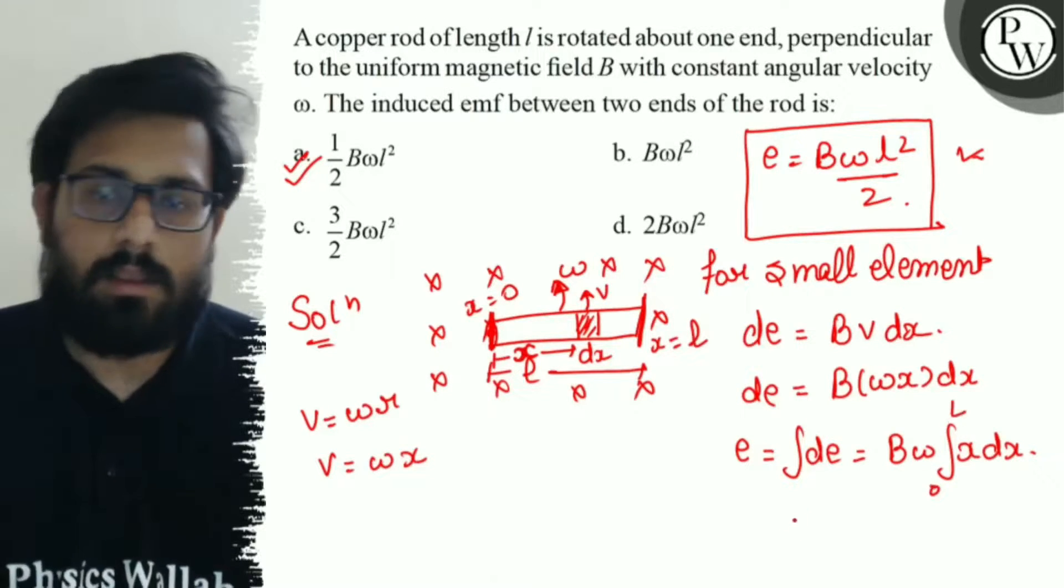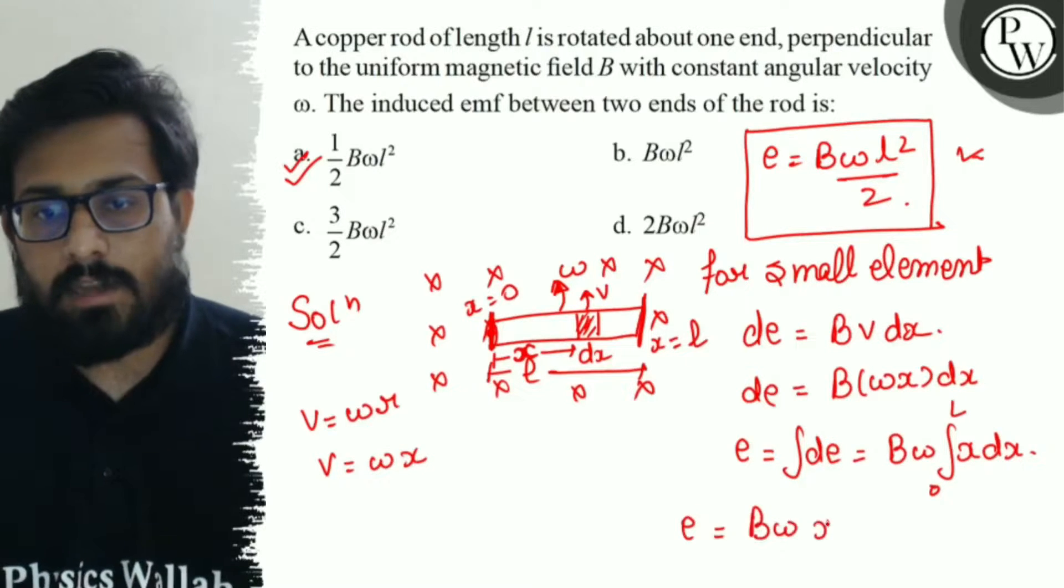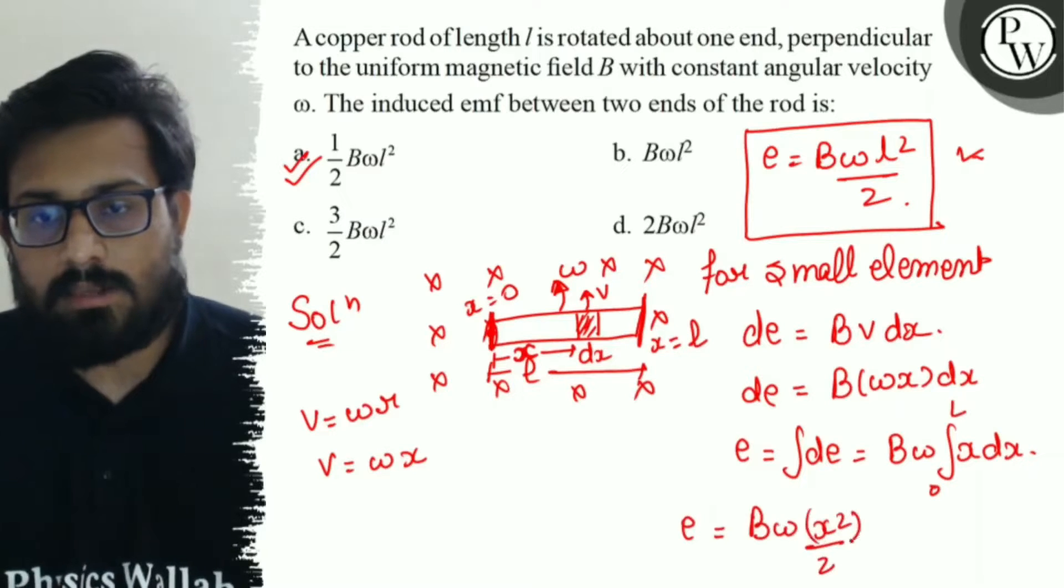So, 0 to L, e equals to B omega, integration of X is X square by 2, applying limits from 0 to L.